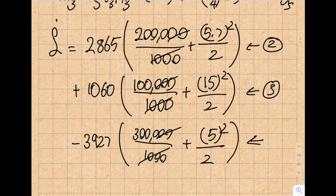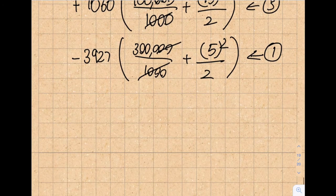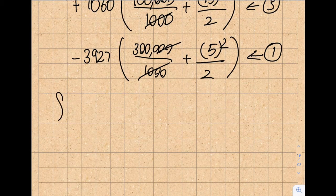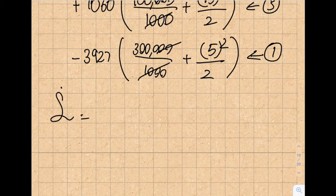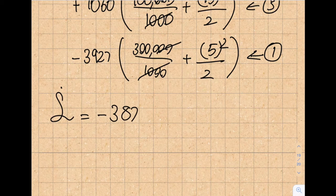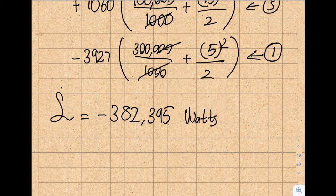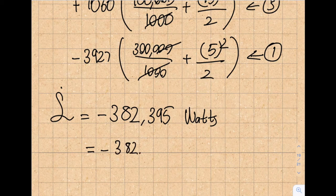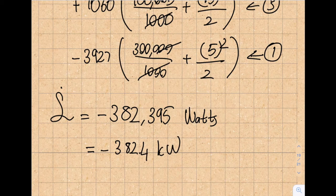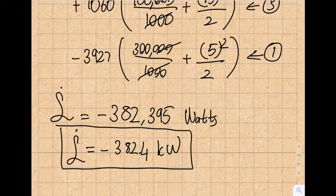So you can see there are some simplifications in here, but at the end of the day what you're going to do is punch these numbers into the calculator. What you're going to obtain is my L̇ will equal minus 382,395. What's the unit of power in SI? Watts. If I convert this to the units I prefer, it's going to be 382.4 kilowatts—that is the power lost in this fluidic system.